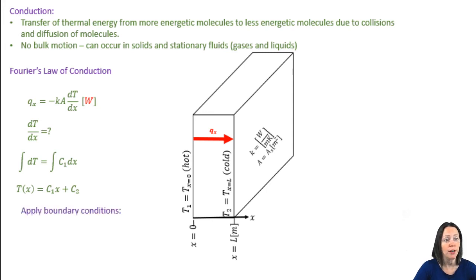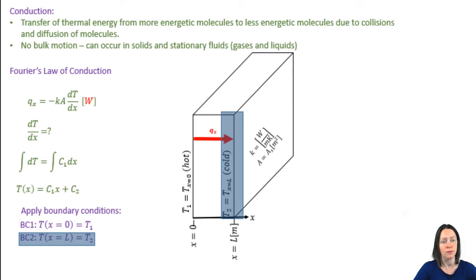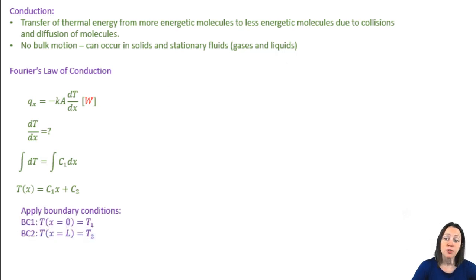We have two unknowns, so we need two boundary conditions, and we happen to have a prescribed temperature at two surfaces. The first boundary condition is at x equals 0, and the second is at x equals L. Substituting the first boundary condition into the equation for T(x), we can solve for C2, and it's equal to T1.